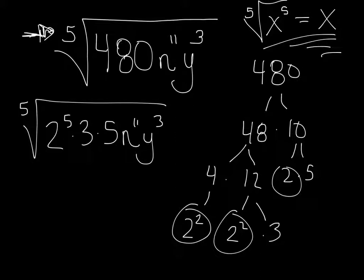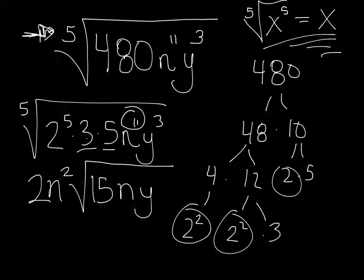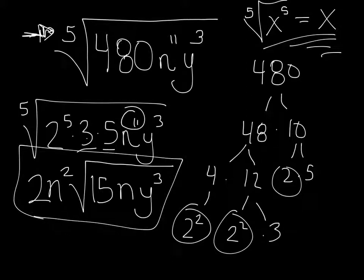The fifth root of 2 to the fifth is just 2. For n to the eleventh: 11 divided by 5 gives 2 with remainder 1, so n squared comes outside and n stays inside. The 3 and 5 stay inside as 15, and y to the third stays inside since there aren't enough y's to pull any out. The simplified form is 2n squared times the fifth root of 15ny cubed.